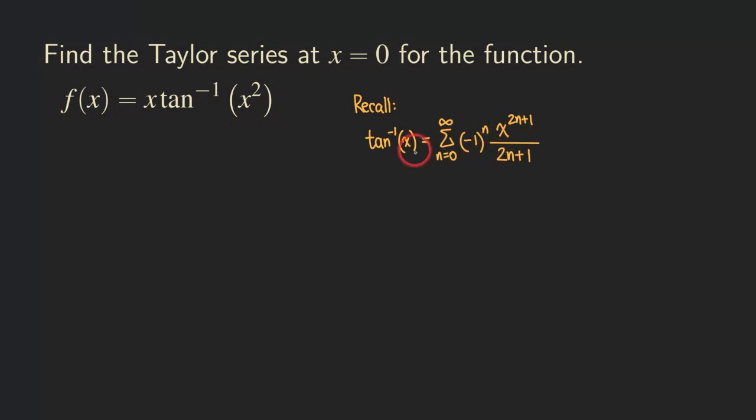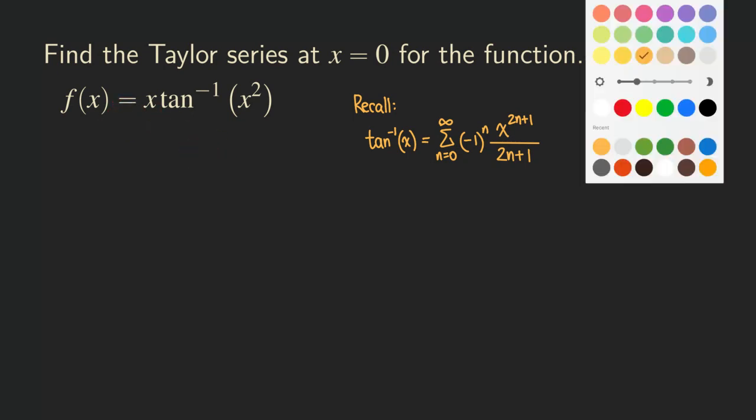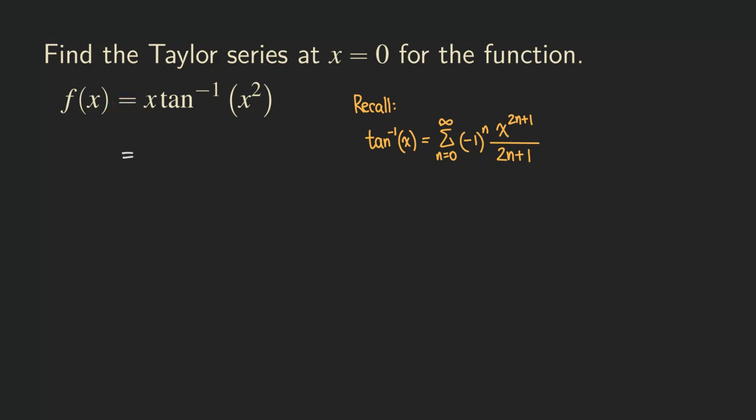So now how do we use this fact to help us find the Taylor series for this function here? What we can do is substitute the x square into this x right here. And then that means we're going to substitute the x square into this x. So we can start by writing down the x. What about this x in front of the tangent inverse? We can just leave it there, and then after we write down the Maclaurin series for the tangent inverse, we can multiply the x into the series.